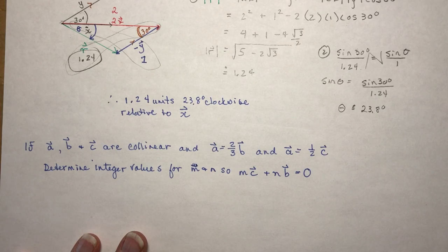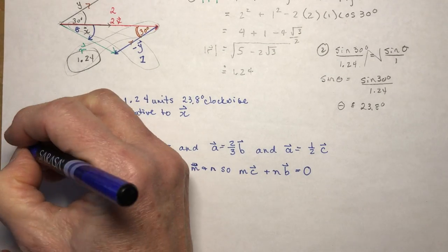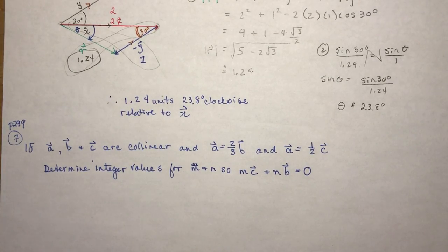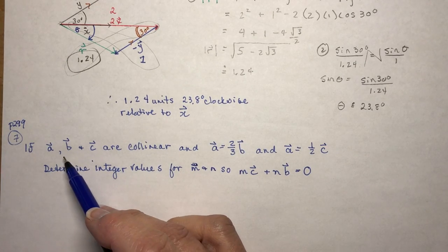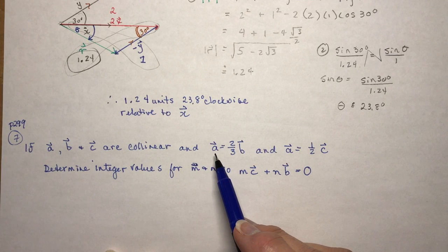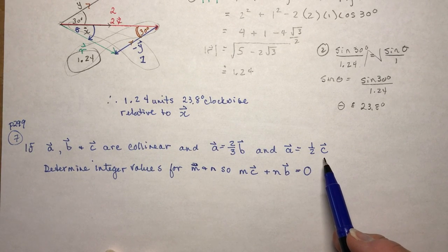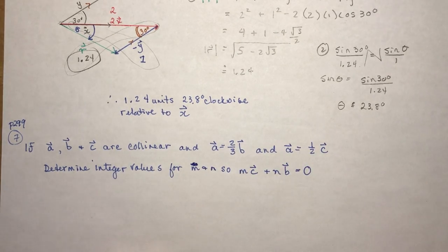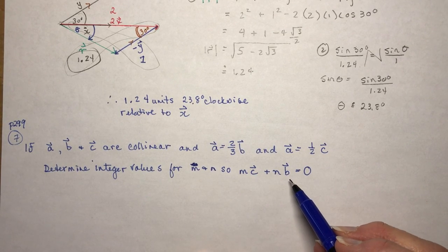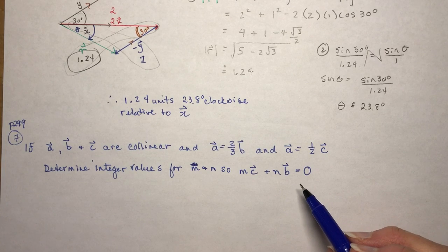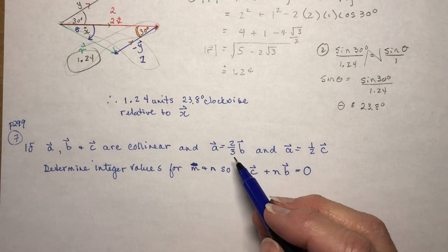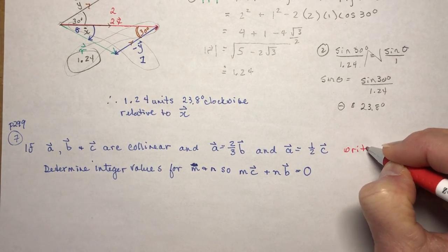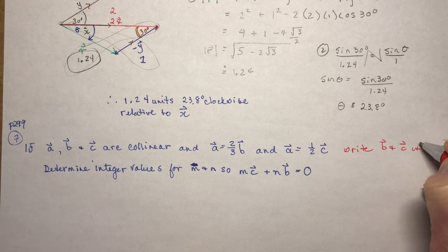The last question is number 7, page 299. Vectors A, B, and C are collinear — meaning all on the same line. A is two-thirds B, and A is one-half C. Determine integer values for M and N so that MC plus NB equals zero. To make sense of this, I need to write B and C in terms of A.